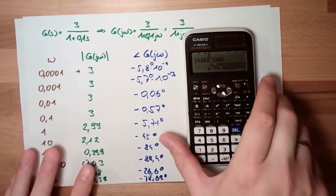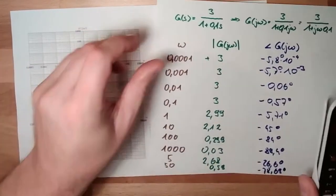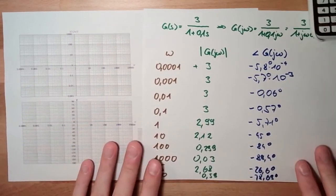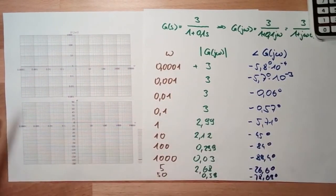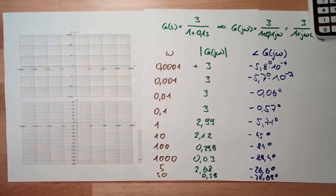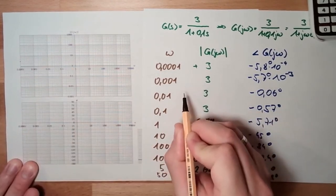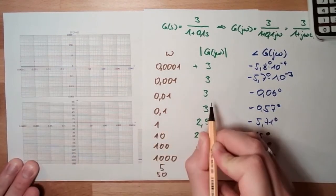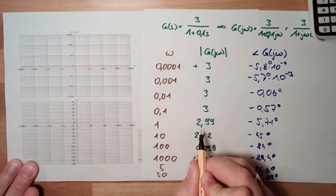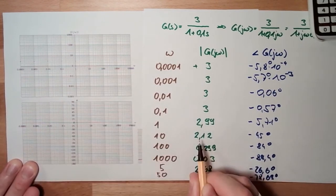Now let's enter this in our Bode plot. At omega 0.01 we are at plus 3, so we'll draw it there. At omega 0.1 we are also at plus 3. Here we are at 2.99, so maybe just slightly below. At omega 5 we are at 2.68.